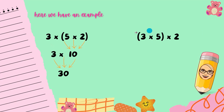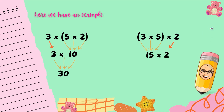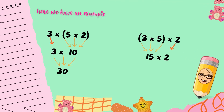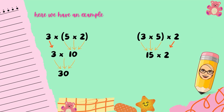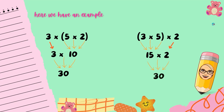Now let's see when we do this other grouping. 3 times 5 equals 15, then 15 times 2. You may say, I don't know how to multiply 15 times 2. Remember that multiplication is like repeated addition. In this case, we can add 15 plus 15, and we know that it is 30.